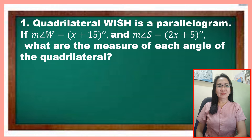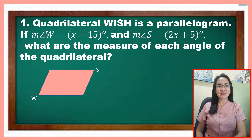Quadrilateral WISH is a parallelogram. If the measure of angle W is equal to x plus 15 degrees and the measure of angle S is equal to 2x plus 5 degrees, what are the measures of each angle of the quadrilateral? Let us draw the figure named WISH, where the measure of angle W is x plus 15 and the measure of angle S is 2x plus 5.